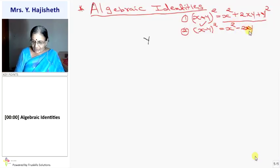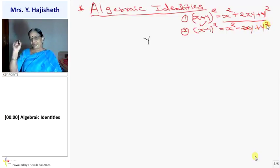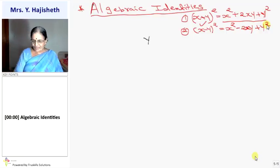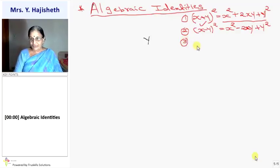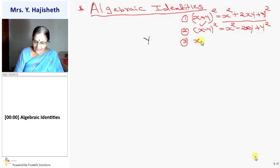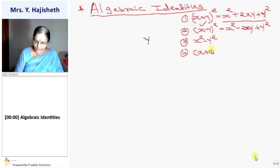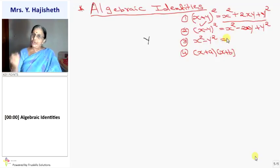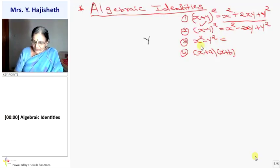All these identities you have done in standard 8 — you have done sums based on this in the chapter on algebraic expressions. You have done all four formulas. Third is x squared minus y squared — the difference of two squares. And fourth is the product of x plus a into x plus b. These four formulas you have already learned in standard 8.